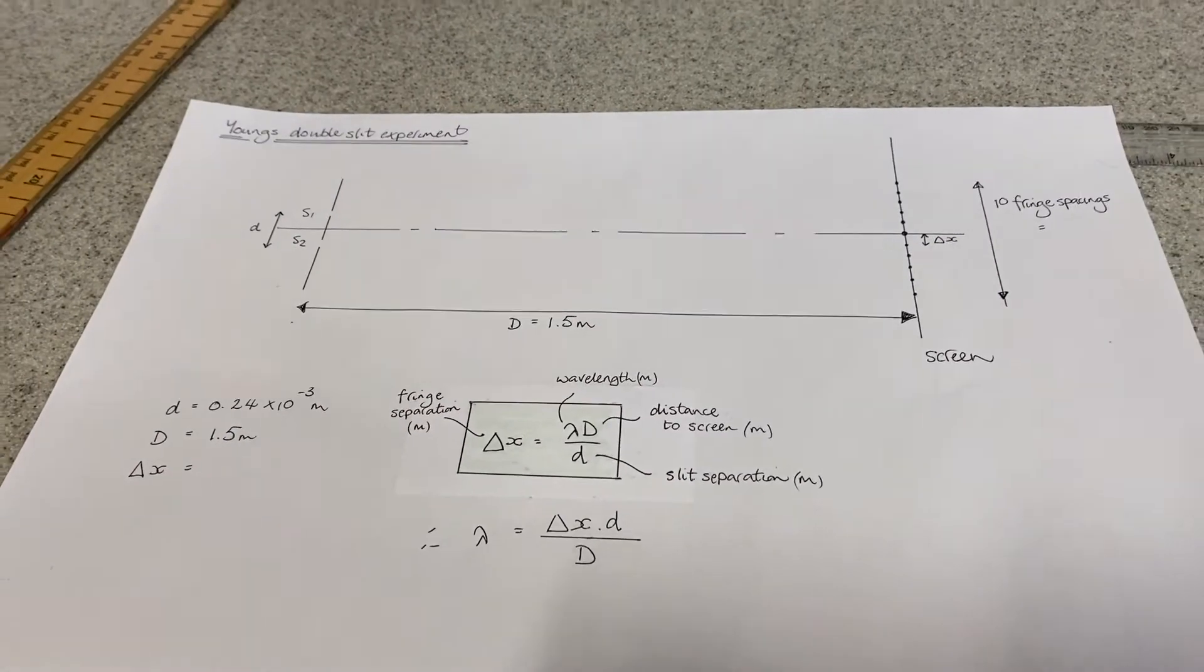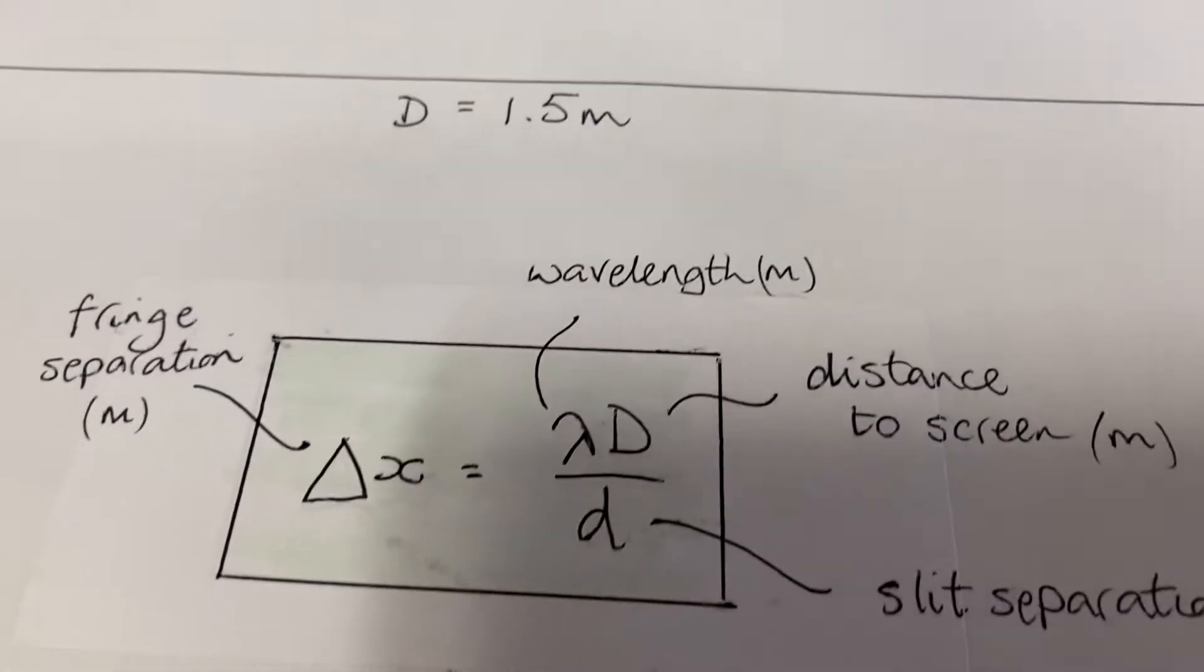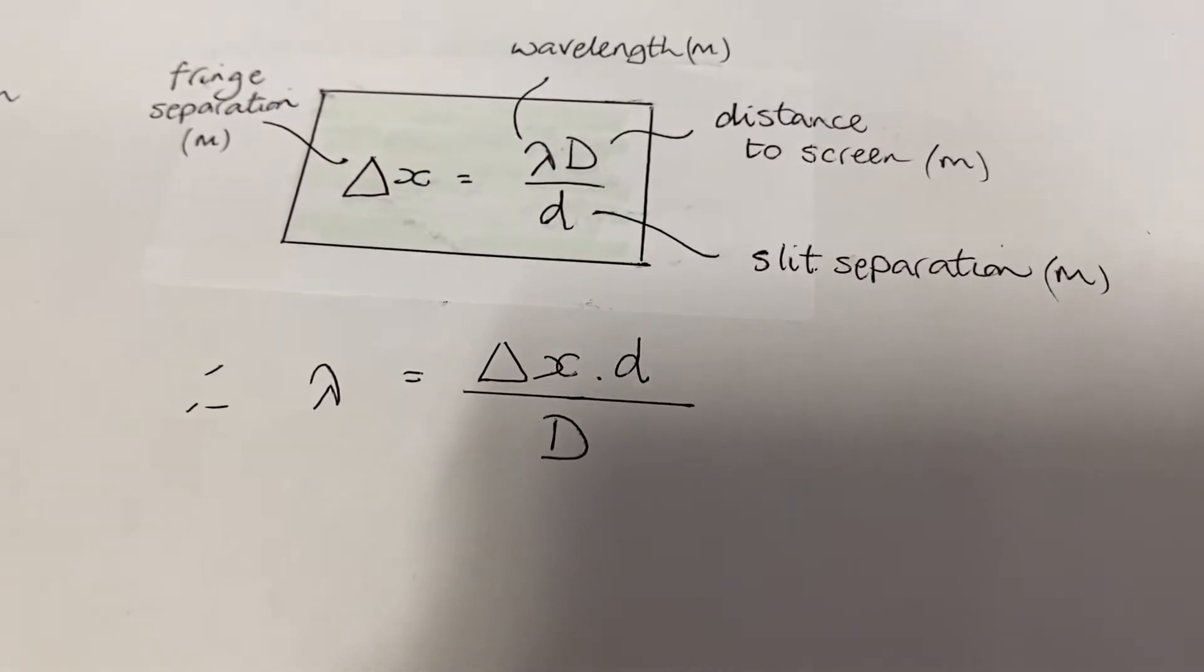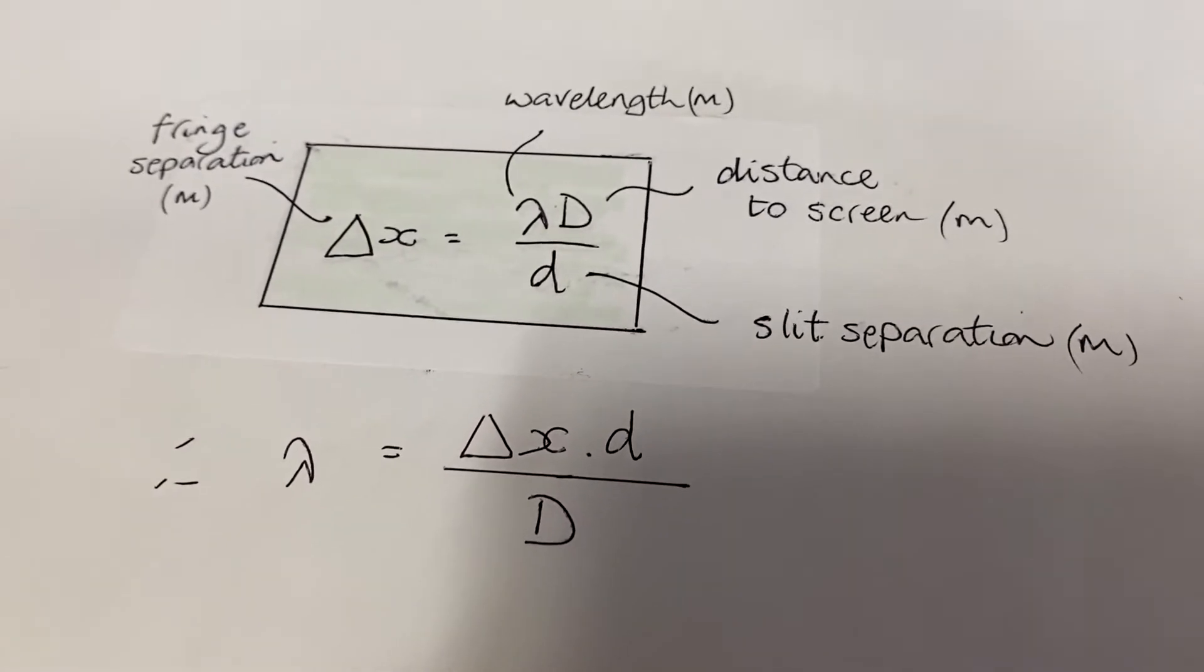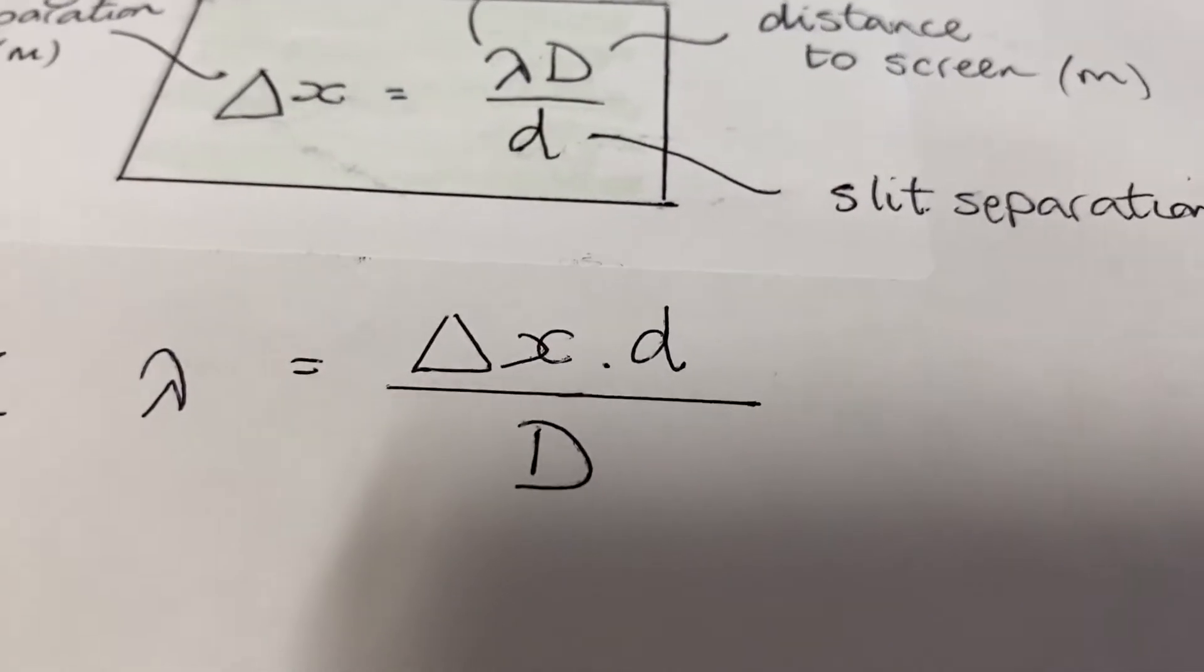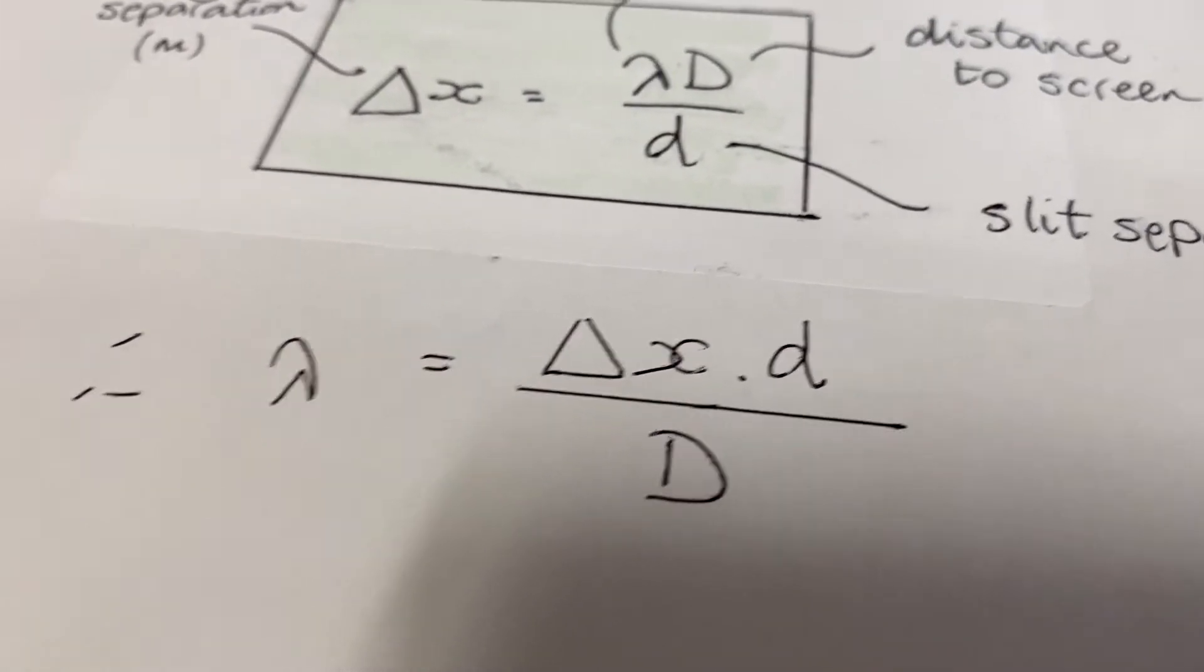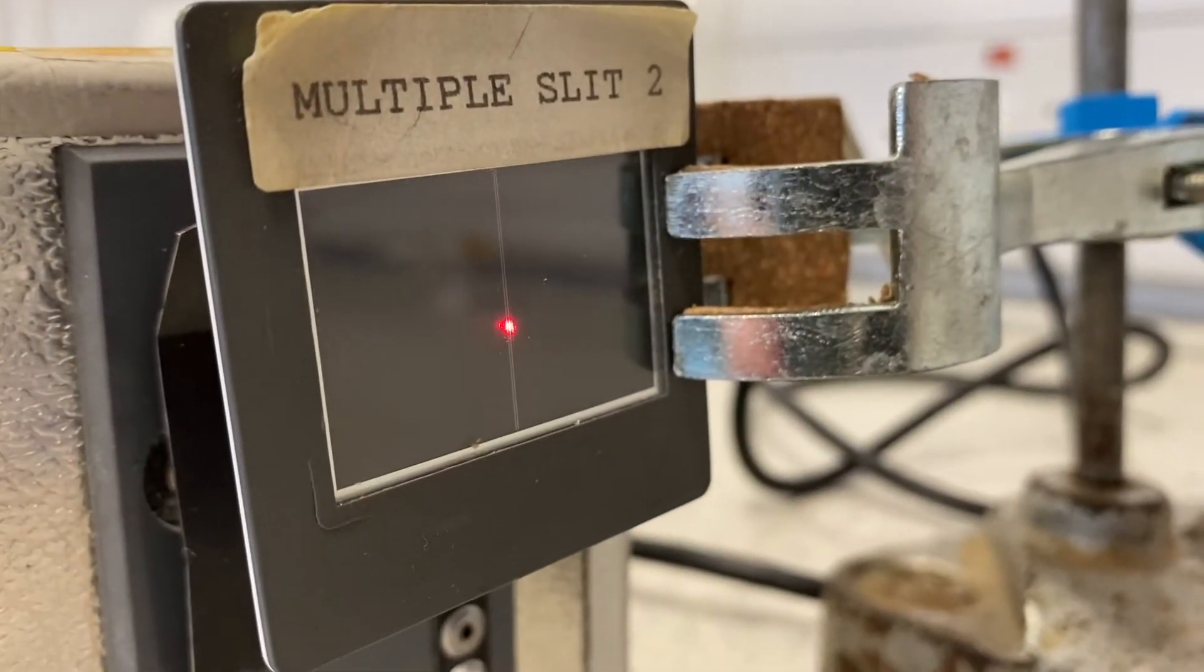it also allows us to determine the wavelength of the light. Here's the relationship that's on your relationship sheet. If we rearrange it, we can calculate the wavelength. Delta X is the separation of the fringes—those bright spots. Small d is the slit separation of the two slits on the double slit itself.